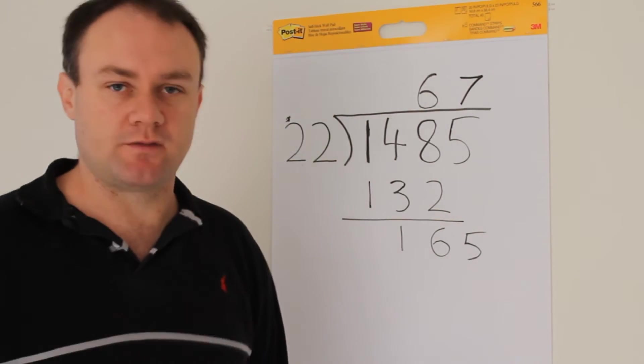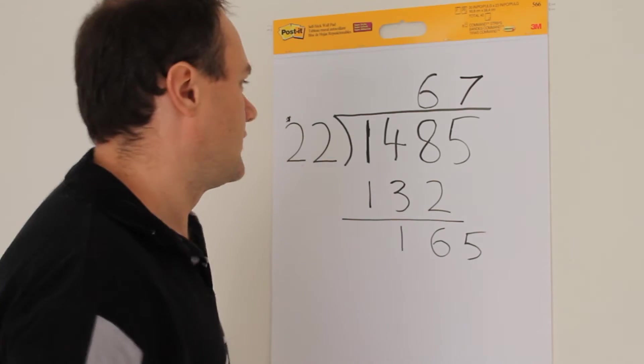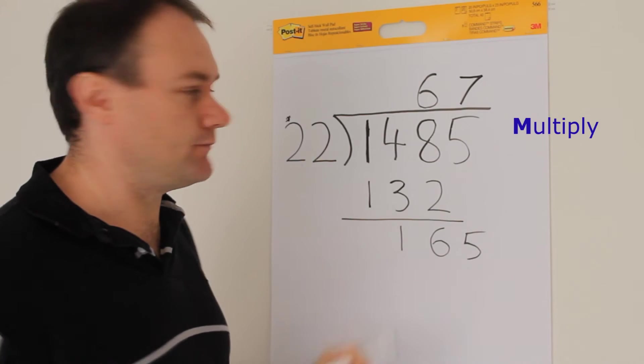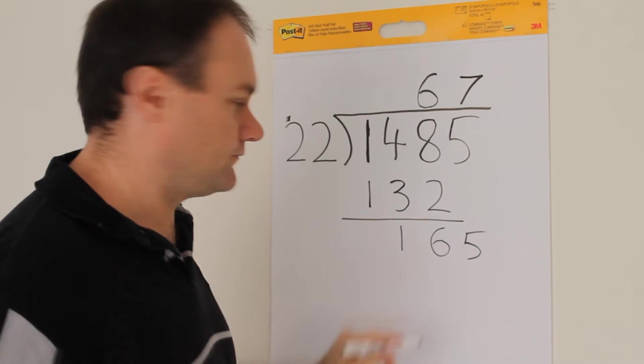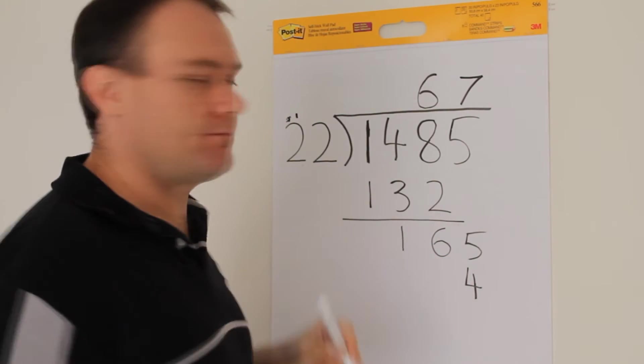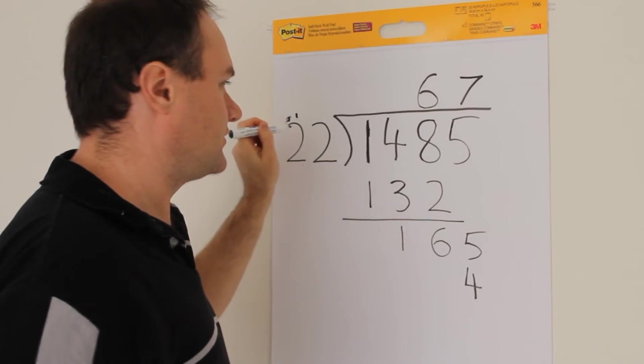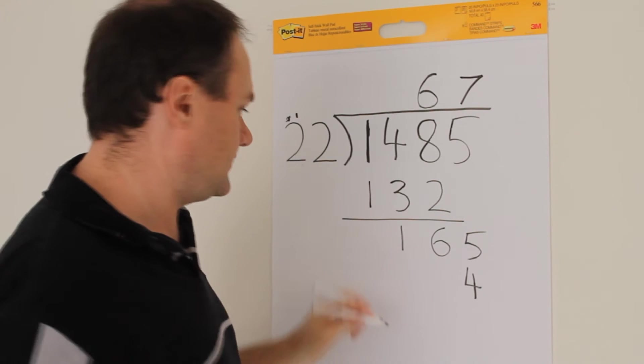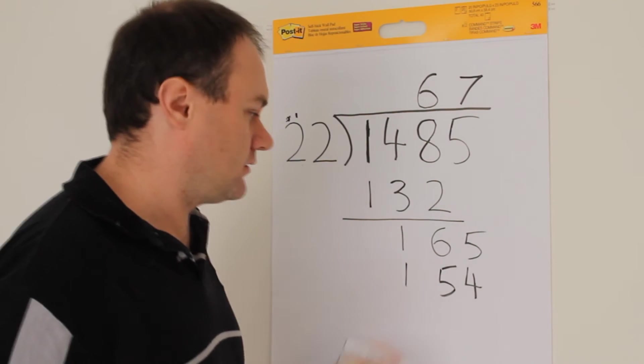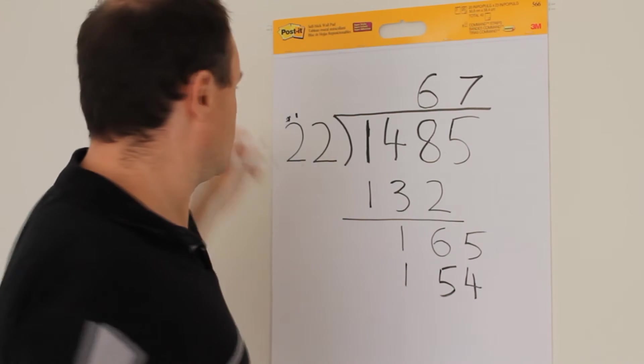And now we repeat the process all over again. Firstly, multiply. 7 times 22. 7 times 2 is 14. Put down the 4. Carry the 1. 7 times 2 is 14, plus 1 is 15. There we go. That's the multiplication section done.